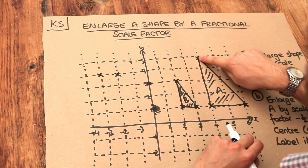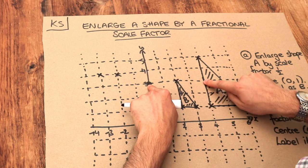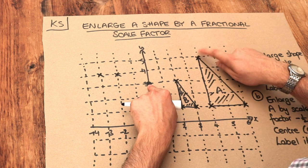Finally, let's do this top point. Starting from the centre of enlargement, it's 1, 2, 3, 4 right and 2 up.